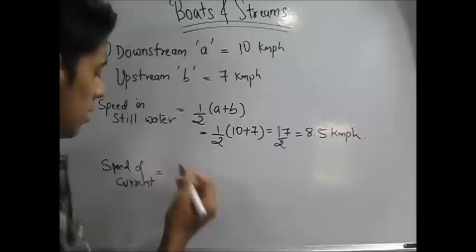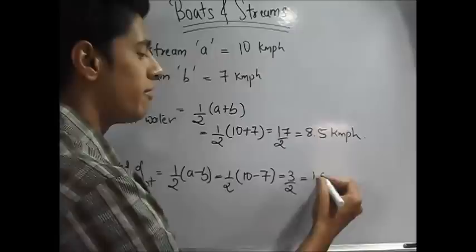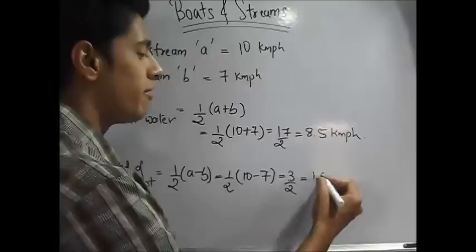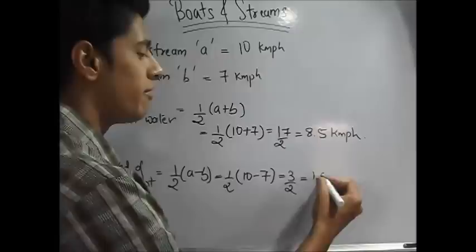Similarly, the speed of the current. Speed of the current is what? Current is water, speed of the stream. Speed of the stream is half a minus b. That is half of 10 minus 7. That is 3 by 2 or 1.5 km per hour. This is your final answer. Simple, right?